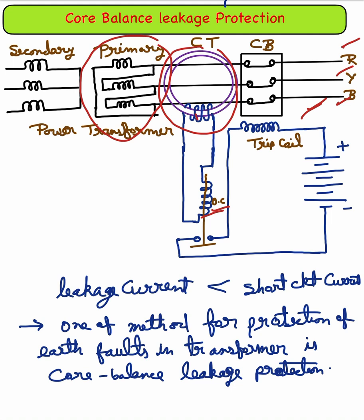When an earth fault occurs, the sum of the three phase currents R, Y, B is no longer zero, and a current is induced in the secondary of the current transformer, causing the relay coil to trip and isolate the transformer from the busbar.